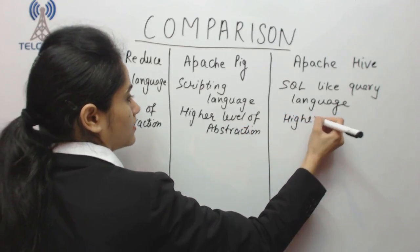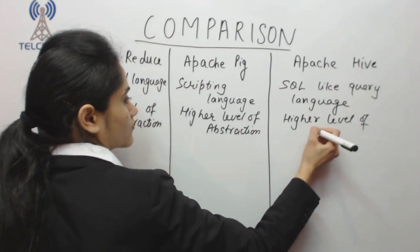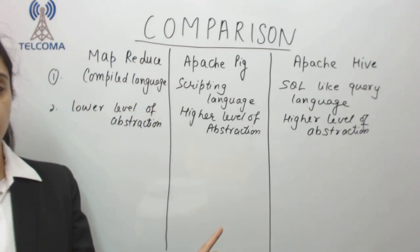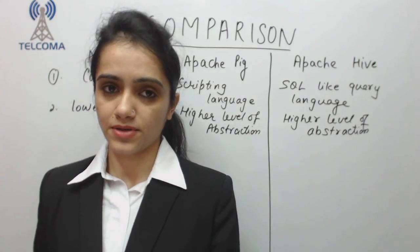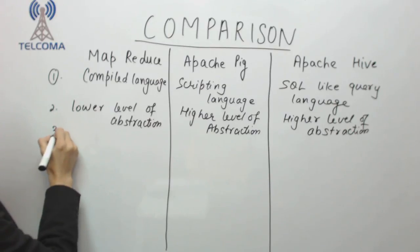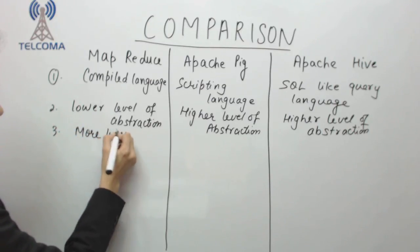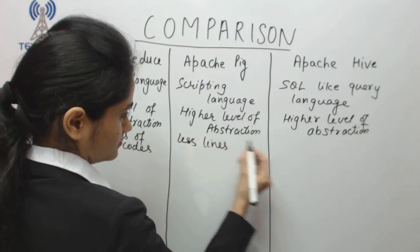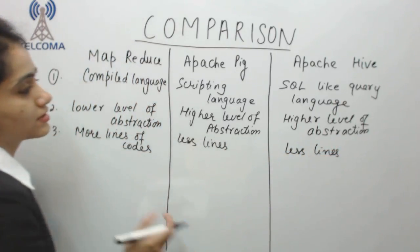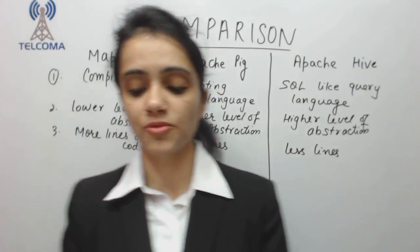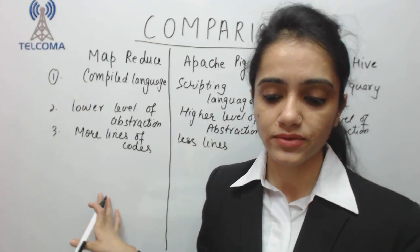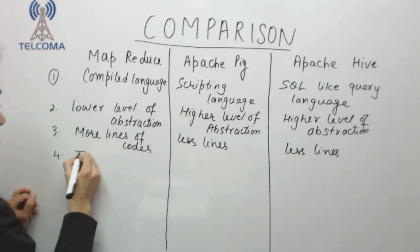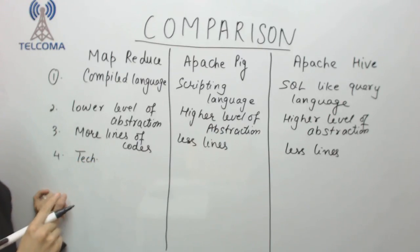In terms of abstraction, MapReduce is a lower level of abstraction, whereas Pig and Hive both have a higher level of abstraction. In MapReduce we have more lines of code, which means MapReduce programs are more complex because we have more code. This is technically complex and requires higher development effort.